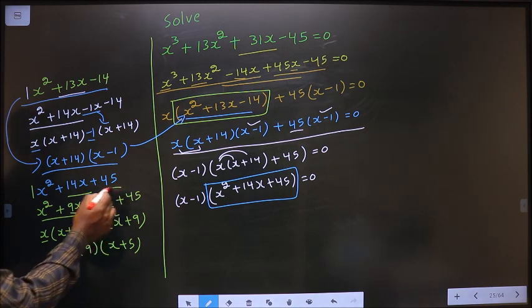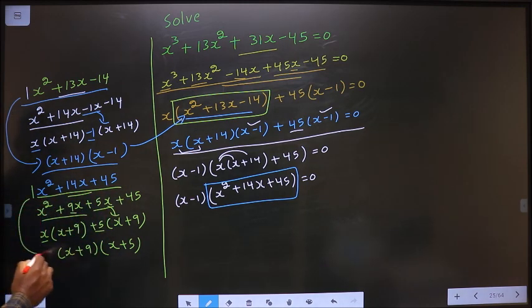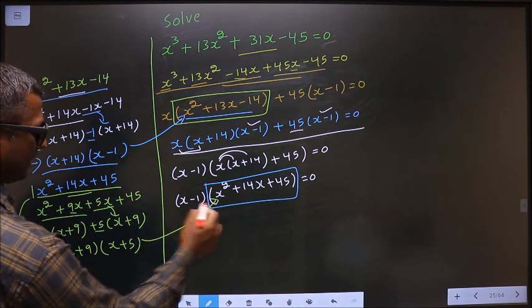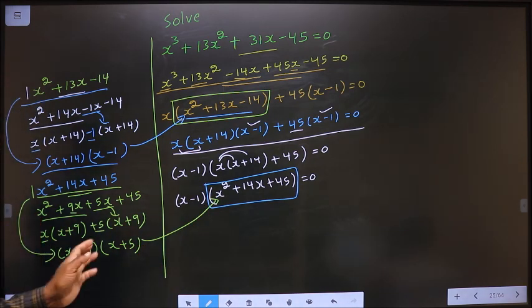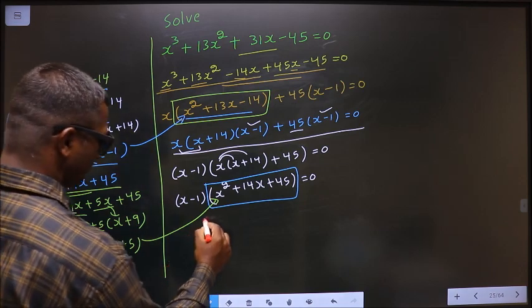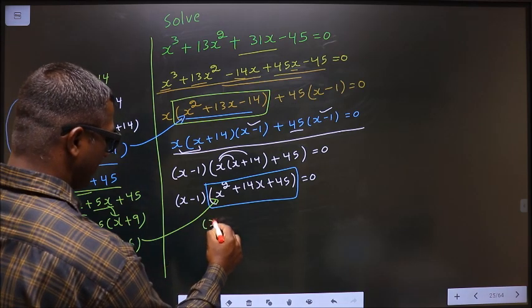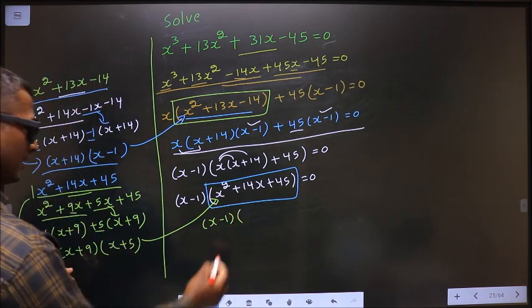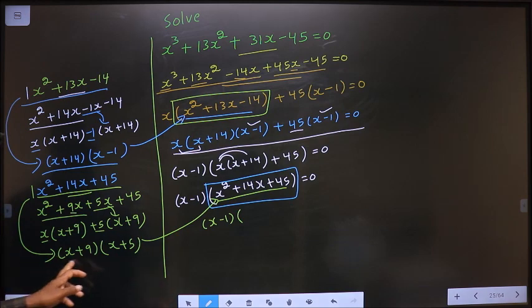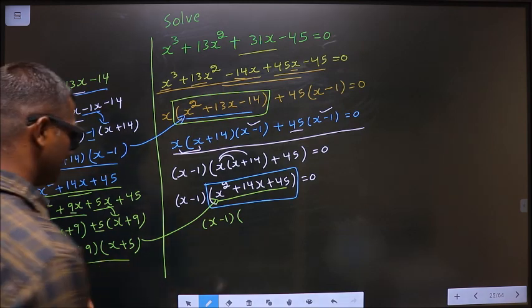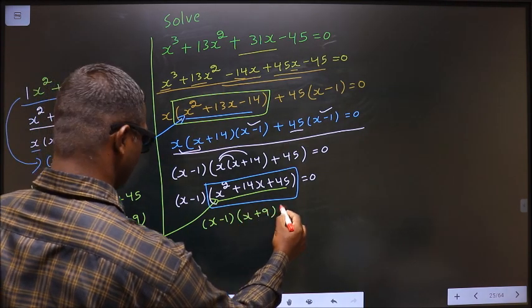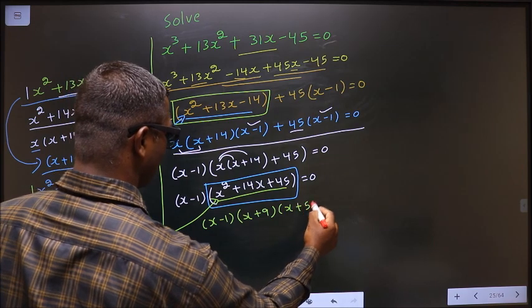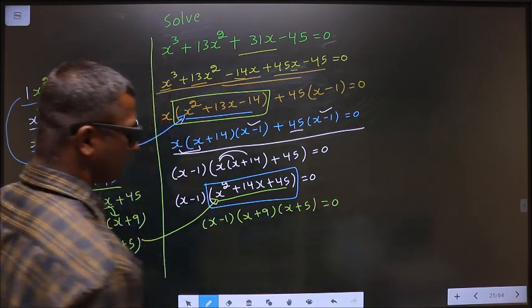In place of this quadratic, I replace this one over here. So we get x minus 1 — in place of this quadratic — x plus 9, x plus 5, equal to 0.